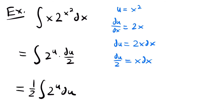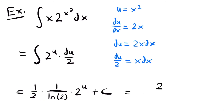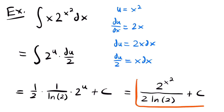Using our integration rule for an exponential function with a base other than e, this equals 1 half times 1 divided by the natural log of 2, times 2 to the power of u plus c. Replacing u with x squared, the final answer is 2 to the power of x squared divided by 2 times the natural log of 2 plus c.